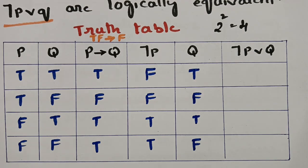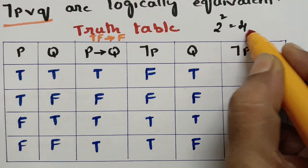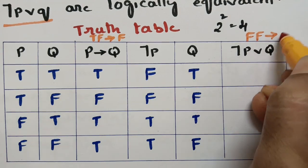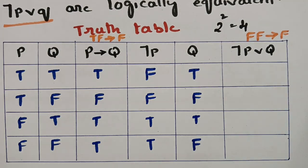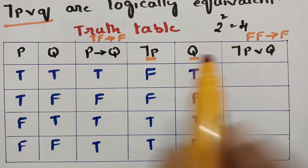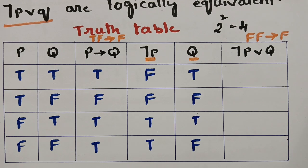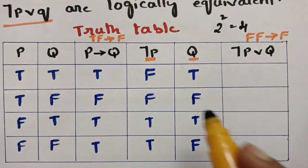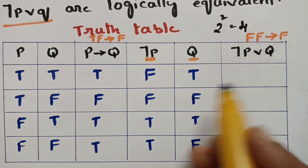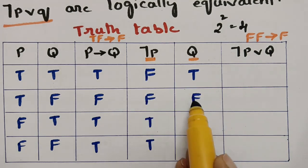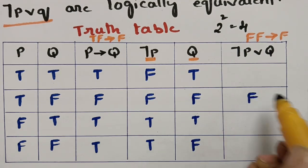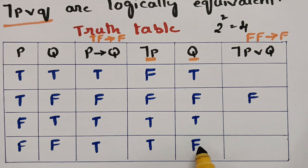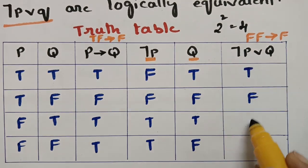Now for the disjunction negation p or q, the logic is: if both values are false, immediately write false; otherwise write true. Comparing negation p and q row by row, we find only one row with two false values, so that row gives false and the remaining rows are all true.